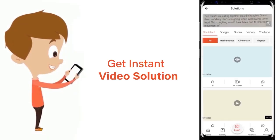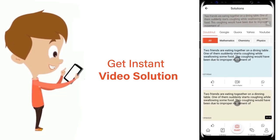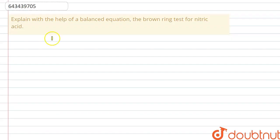The question is: explain with the help of a balanced equation the brown ring test for nitric acid. They are asking us to explain the brown ring test used for testing nitric acid. Let's suppose we have a solution and we don't know which solution it is, so to check if it is nitric acid, we use the brown ring test.